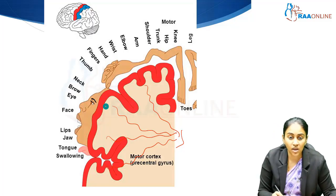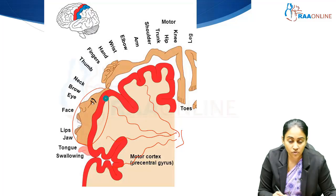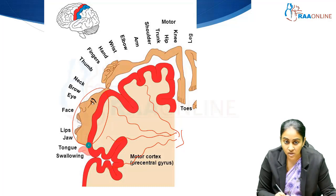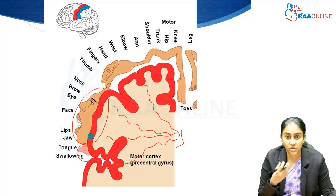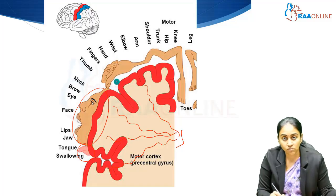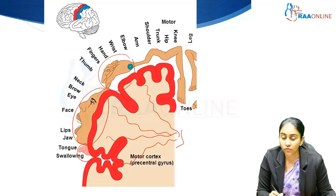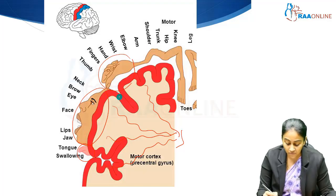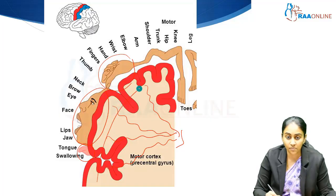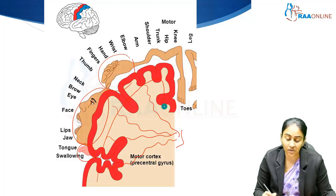A large portion of the motor homunculus subserves the face — a large portion of the motor cortex actually serves the muscles of facial expression. Then you have a portion which subserves the movements of the tongue. Laterally is the tongue and the face, and as you approach towards the vertex, a lot of space is given for the hand and the thumb, then the upper limb, and then the lower limb. So from below upwards, you have the face, the upper limb, and the lower limb going from lateral to medial in that order.